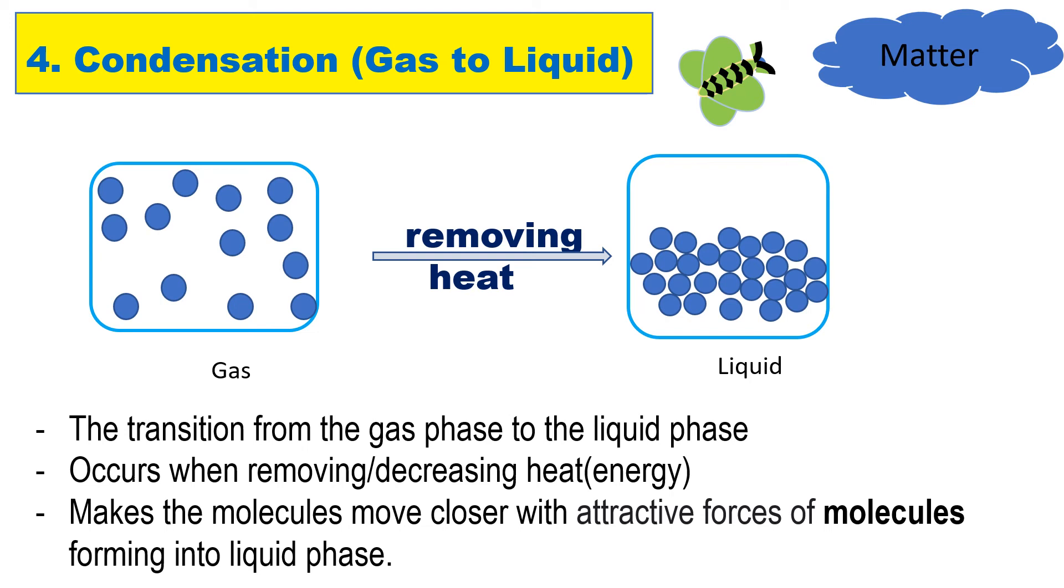Condensation happens when molecules in a gas cool down. As the molecules lose heat, they lose energy and slow down. They move closer to other gas molecules, and finally these molecules collect together to form a liquid. An example of condensation is when a glass of ice forms water droplets on the outside of the glass. Another one is the formation of clouds.